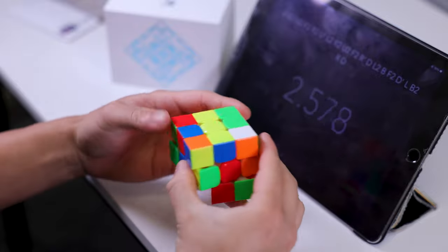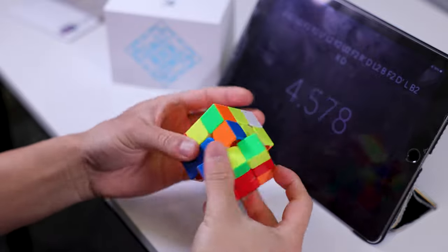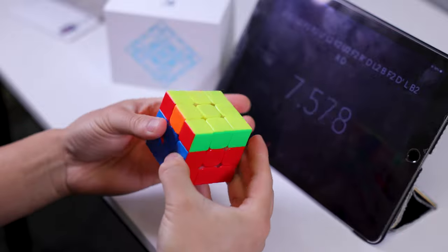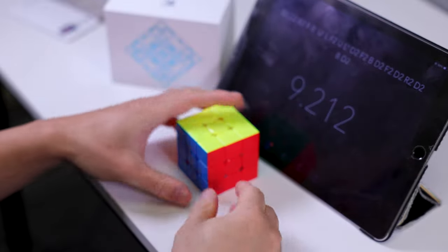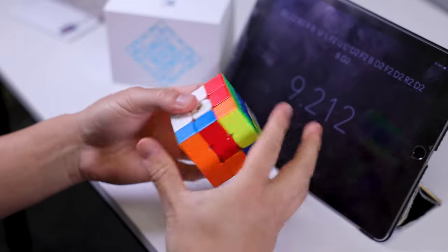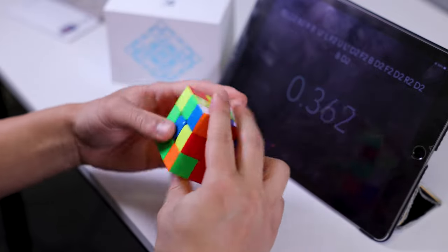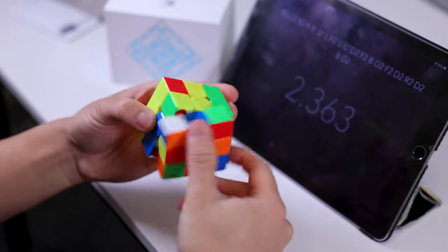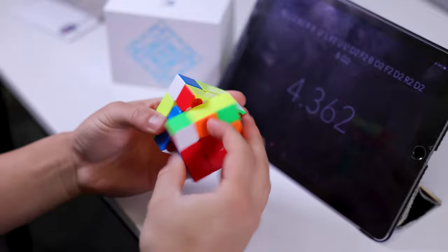I have mixed feelings on the Zanchi Pro M. It goes without saying this iteration is much better than the 2017 and 2018 versions, both of which were considered failures. As a cube, the Zanchi Pro M is fine. It has good specs, moves reasonably well, can corner cut, and has a suite of features that addresses most cuber needs.